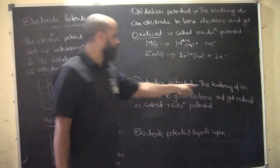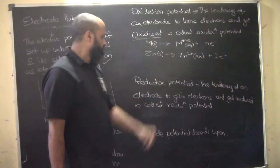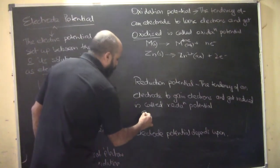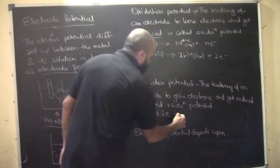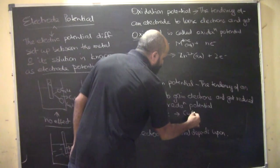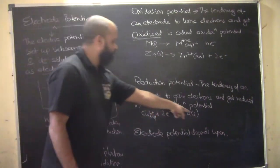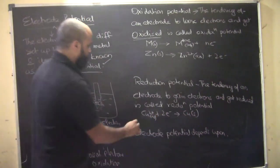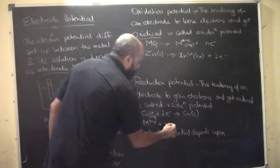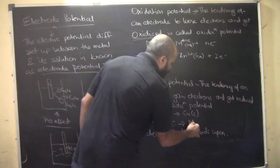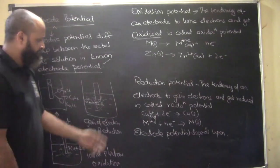In the same way, reduction potential is the tendency of an electrode to gain electrons and get reduced. For example, Cu²⁺ gains electrons and becomes Cu(s). The metal ions M^n+ gain N number of electrons and form the neutral metal in solid form. This is the reduction process.